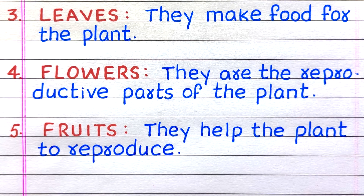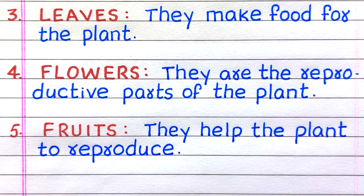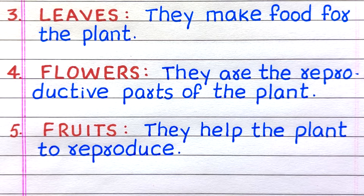The name of the third part of the plant is Leaves. They make food for the plant. Fourth, Flowers. They are the reproductive parts of the plant.